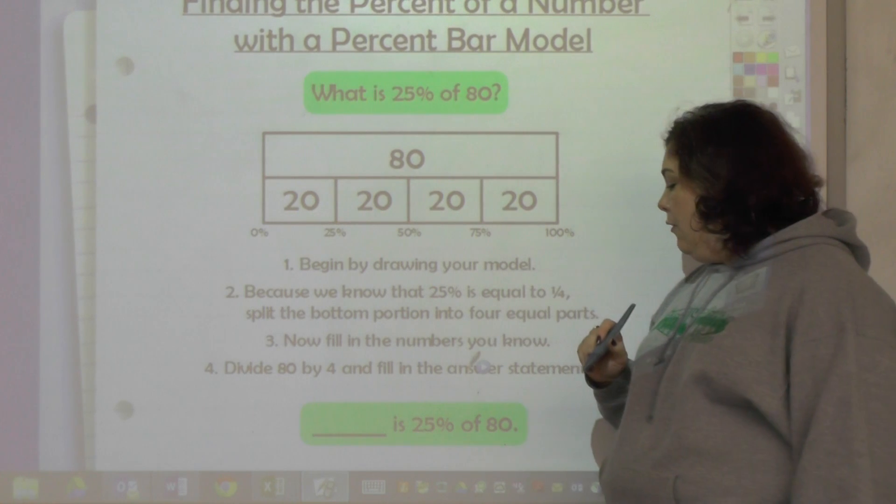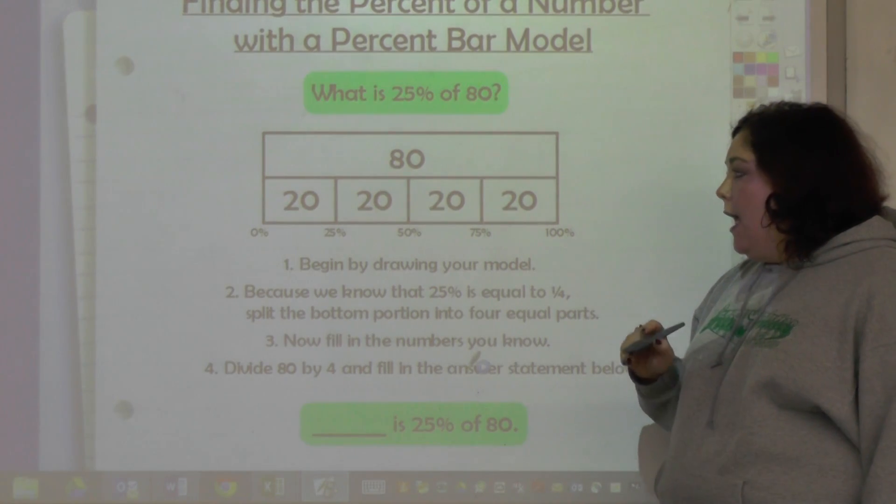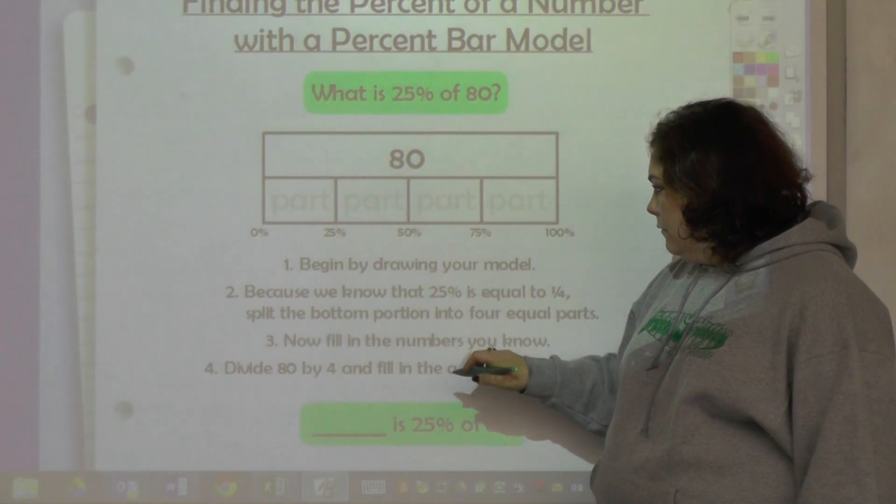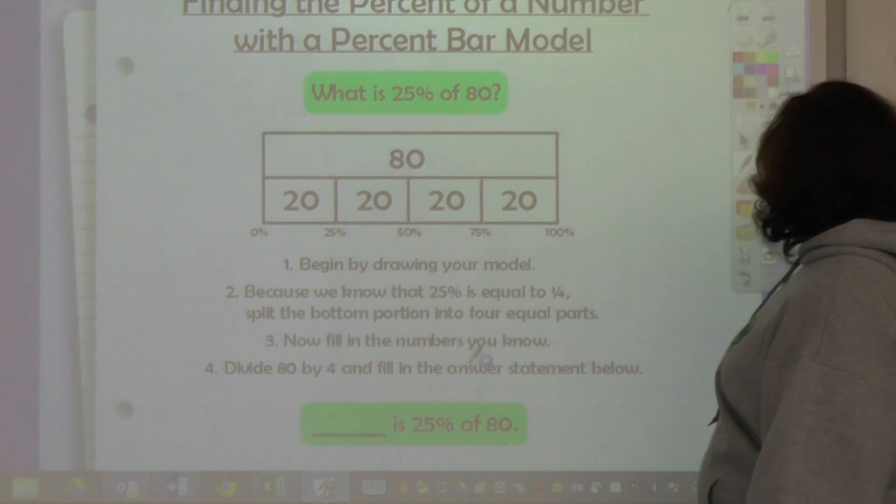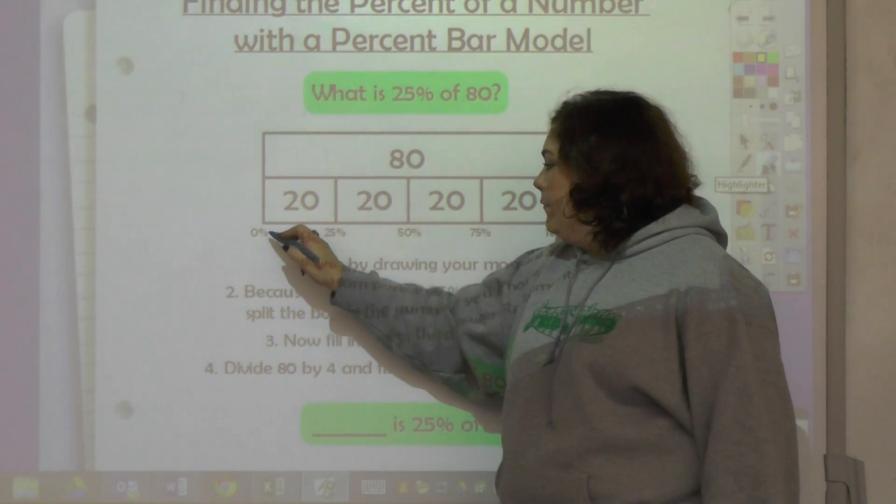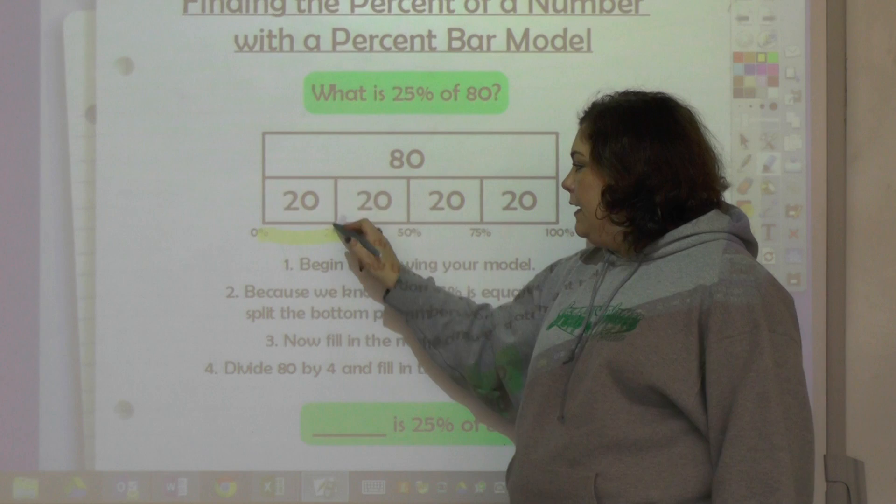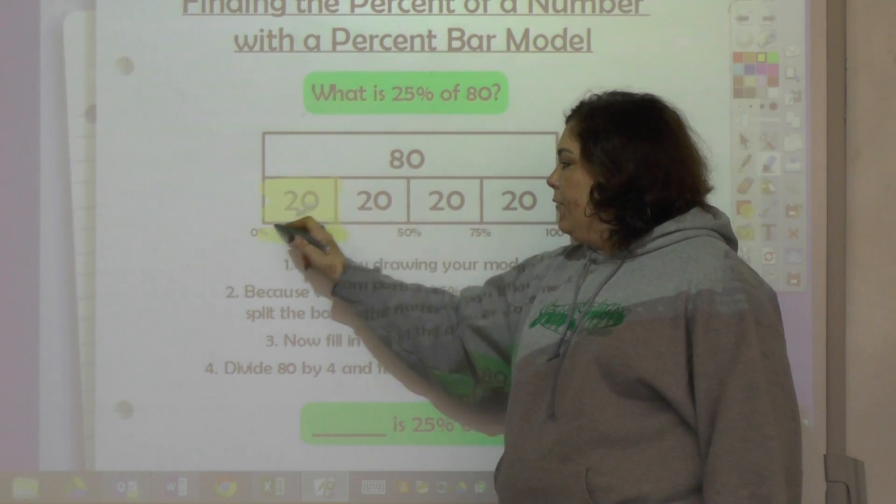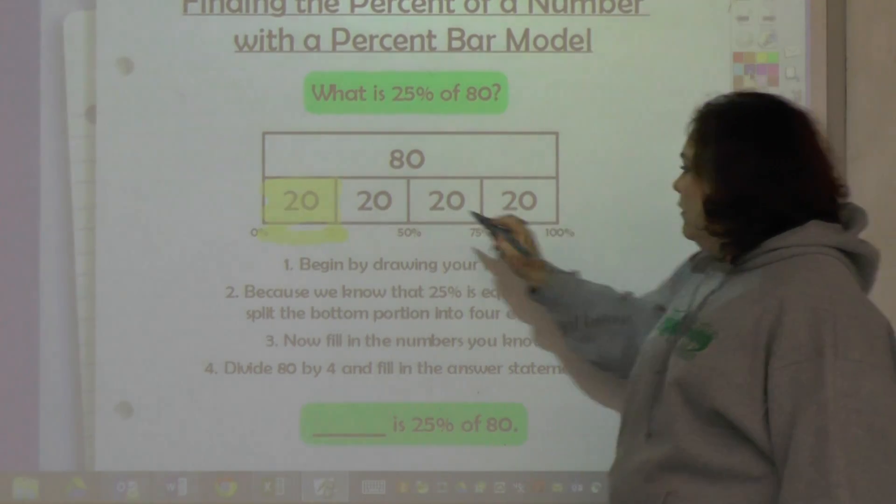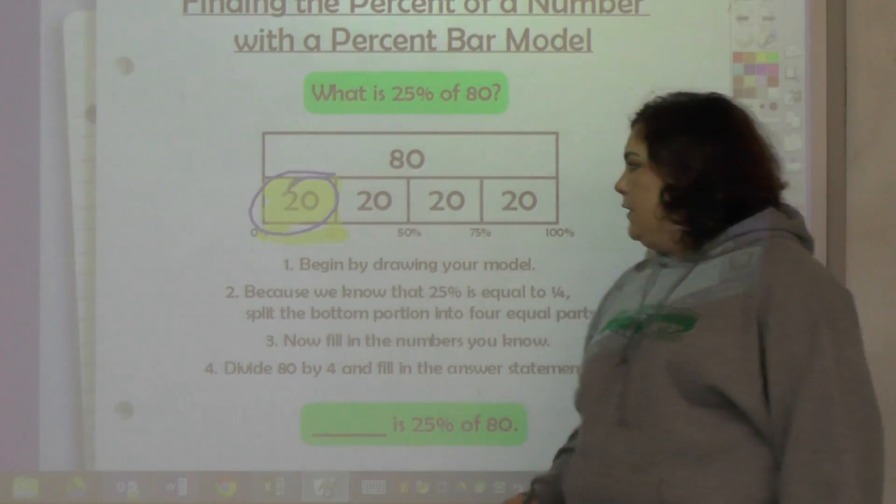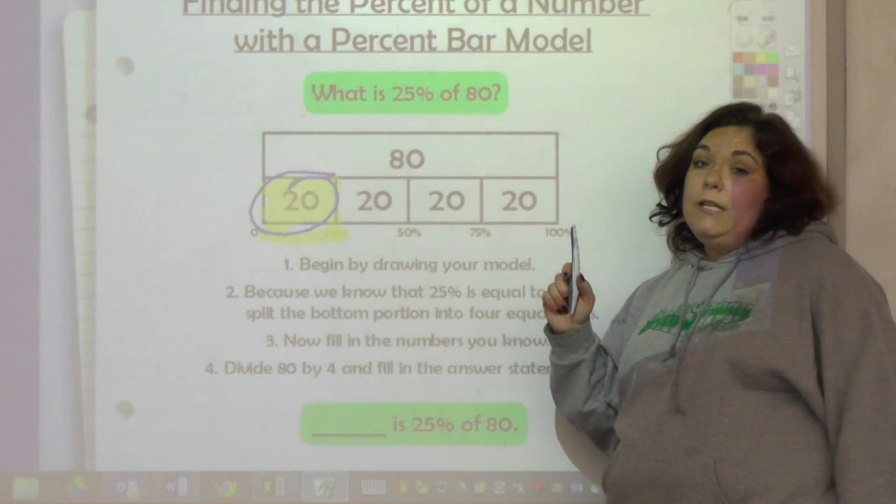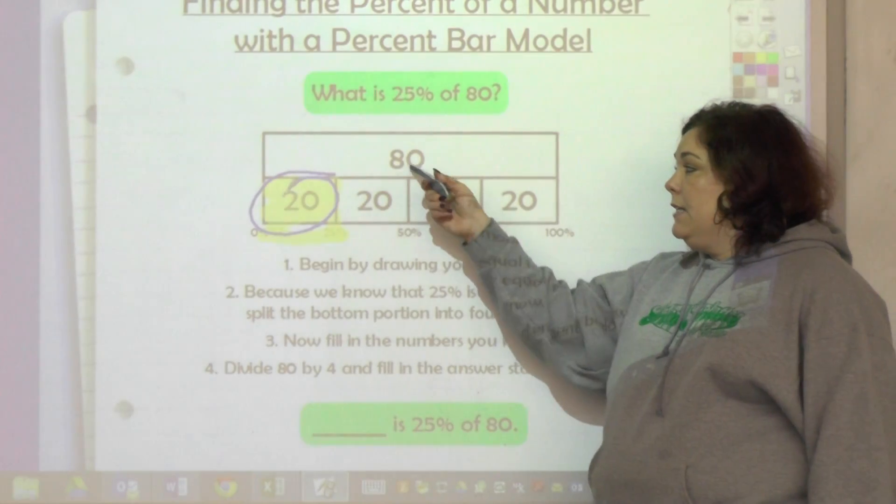So now the question is, how much is 25% worth? It would be 25% - we go to here, and it would be this amount, and that amount is 20. You could also show it by circling it.